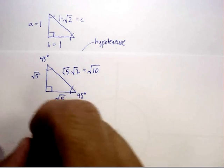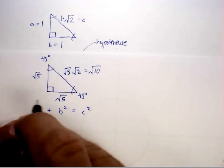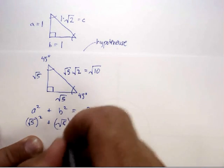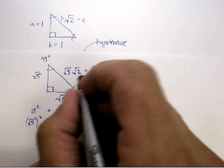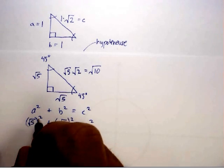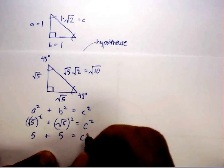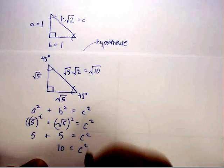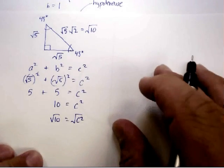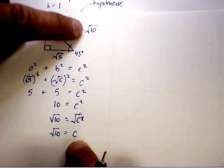Let's verify using the Pythagorean theorem: a² + b² = c². So radical five squared plus radical five squared equals c squared. Squaring the square roots gives five plus five, which equals ten. Taking the square root of both sides gives radical ten — which is exactly what we predicted.